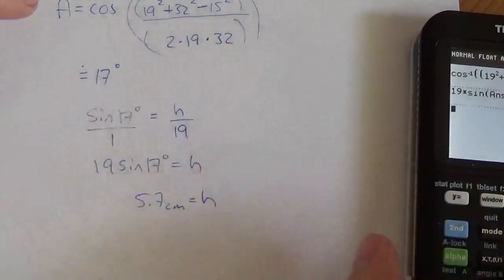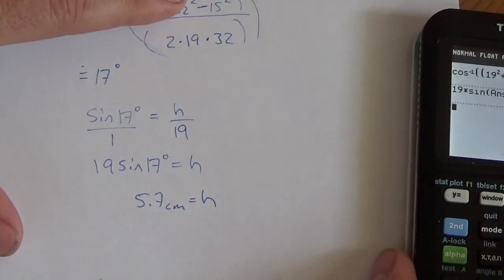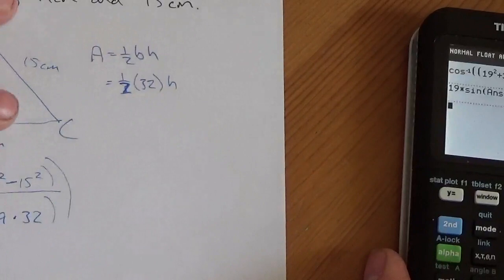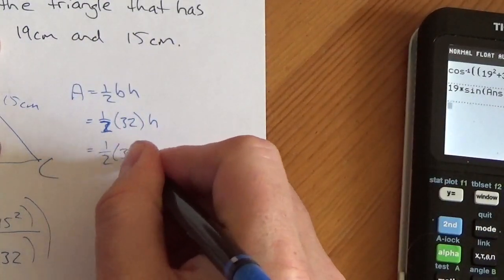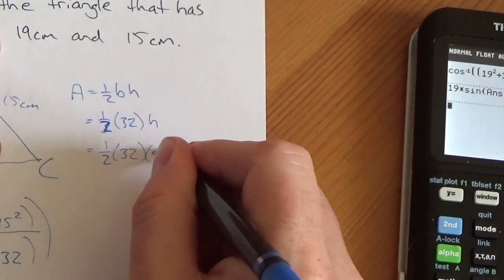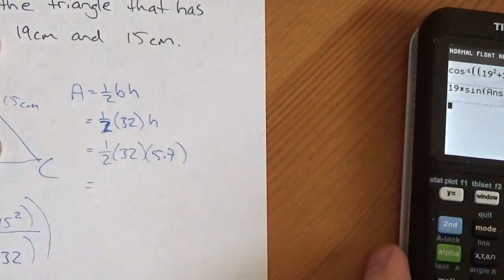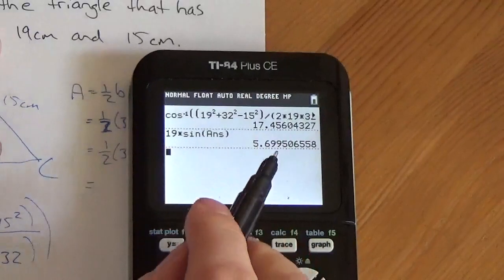But, once again, I'm not done the calculation because I've got to figure out the area. That was just the height, so I'm going to come back up here. But, when I do this calculation, although I'm going to write it here as 32 times 5.7, I am going to use that number.